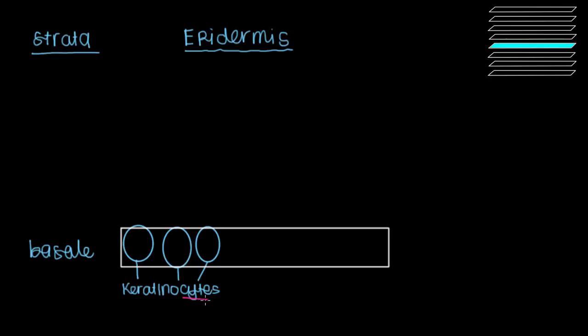And as you might recall, cyte just means cell. So what does keratino mean? Well, it comes from a protein, or an intermediate filament, that's called cytokeratin. Cytokeratin, which is something we first start making in the stratum basale.